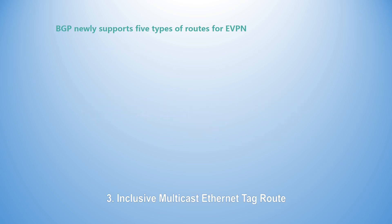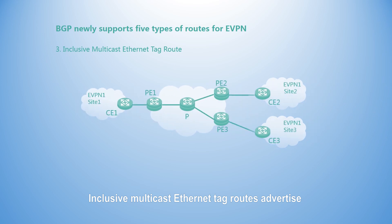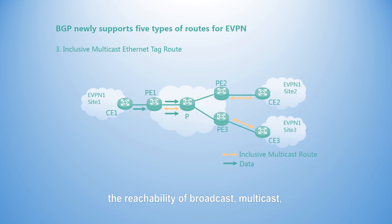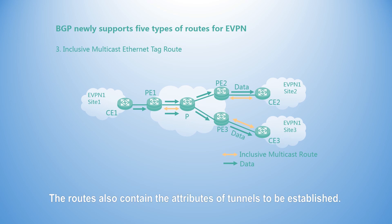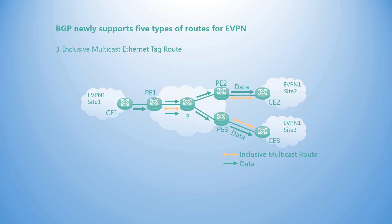Third, the Inclusive Multicast Ethernet Tag Route. These routes advertise the reachability of broadcast, multicast, or unknown unicast BUM addresses to implement mutual neighbor discovery in the broadcast domain, so that the local PE can send BUM traffic received from CEs to the remote PE. The routes also contain the attributes of tunnels to be established, and can be used to establish tunnels for transmitting data-plane traffic between PEs.